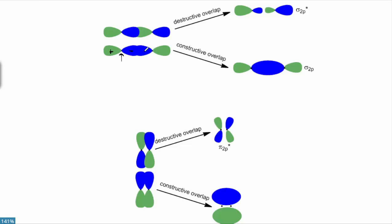When two p orbitals come together in an end-to-end fashion, we call that sigma overlap. In sigma overlap, right where they're overlapping we get constructive interference — they're in phase — and it creates a larger molecular orbital. Because of sigma overlap, we'd call that the sigma 2p bonding molecular orbital. On the other hand, when destructive overlap occurs — right where they overlap they're exactly out of phase — destructive interference occurs and it creates a node right in the middle of the molecular orbital. This molecular orbital is higher energy, and we call it the antibonding sigma 2p star. This little asterisk always signifies antibonding.